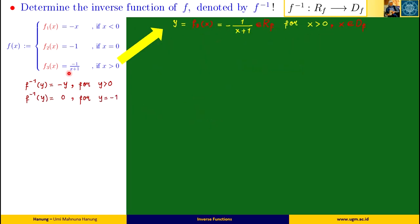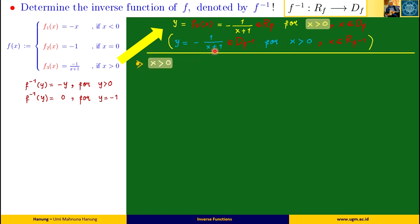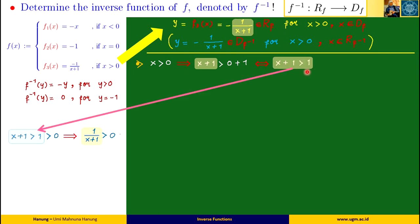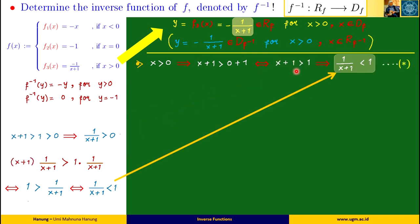The last formula to find is f3 inverse. For positive real numbers x, we have y equals f3(x) equals minus 1 over x plus 1. Since rf is the domain f inverse and df is the range f inverse, we have: y equals minus 1 over x plus 1 in the domain f inverse, for all positive real numbers x in the range f inverse. To determine the y values, we examine the expression minus 1 over x plus 1. Adding 1 to both sides of the inequality x greater than 0 gives x plus 1 greater than 1. Because x plus 1 is greater than 1 and 1 over (x plus 1) is positive, we get that 1 over (x plus 1) is less than 1.